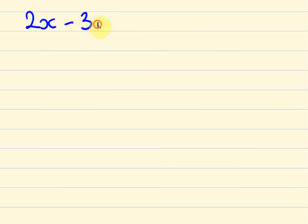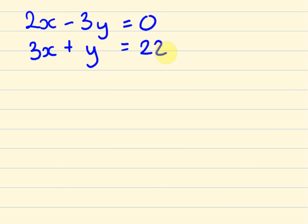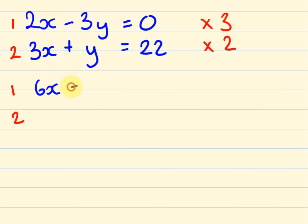So the next equation I'm going to put up is: 2x take away 3y equals 0 — that's equation 1 — and 3x plus y equals 22 — that's equation 2. Try to give it a go. To solve this, I'd stuff around with the y here. This time I'm going to multiply equation 1 by 3 and equation 2 by 2, because we'll end up with 6x and 6x. So we end up with 6x take away 9y equals 0 — because 0 times 3 is 0.